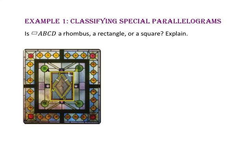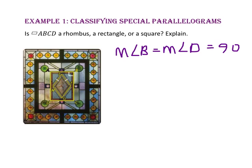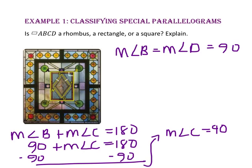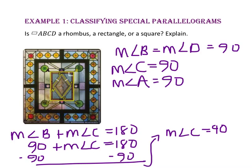In example 1, we will classify special parallelograms. Is parallelogram ABCD a rhombus, a rectangle, or a square? Explain. Since parallelograms have opposite angles that are congruent, the measure of angle B and angle D will equal 90. Consecutive angles are supplementary, so angle B plus angle C equals 180. Substituting 90 for angle B, we find angle C is also 90. Since opposite angles are congruent, angle A is also 90. Since all four angles measure 90 degrees, they are all right angles, so parallelogram ABCD is a rectangle.